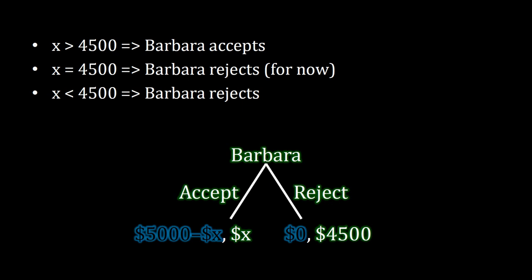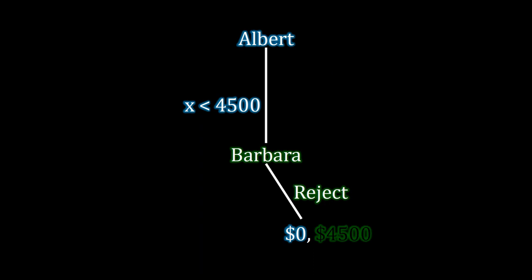Now that we've solved for everything Barbara could possibly do for any given offer from Albert, we can figure out what's best for Albert. We can highlight Albert's payoff and ignore Barbara's — we no longer need to pay attention to Barbara's payoffs because that's already been incorporated through backward induction. If Albert makes an offer of less than $4,500, Barbara rejects and he receives a payoff of zero. And if X is exactly equal to $4,500, we supposed Barbara would reject, so Albert again receives zero.